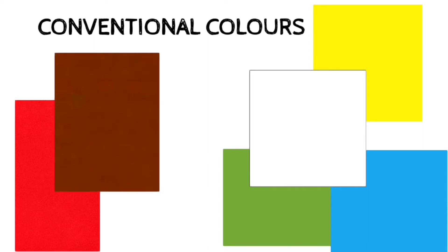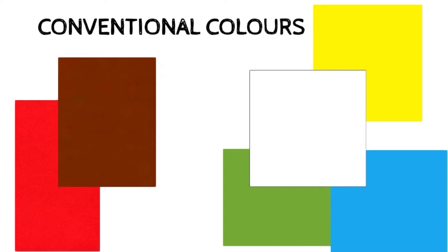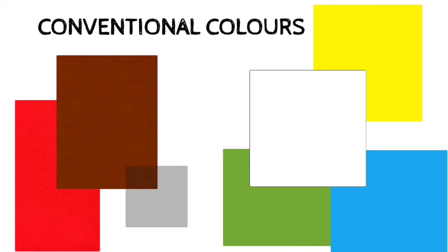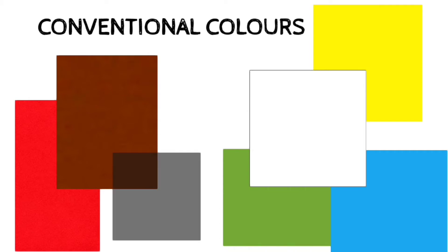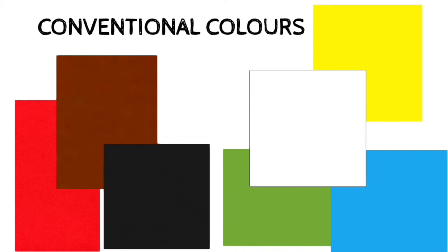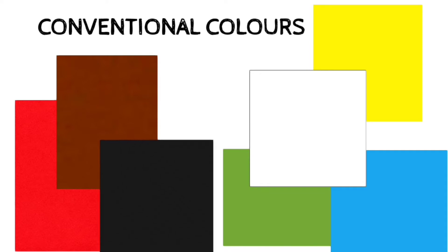Black color is used to show all the names written in a topo sheet, river banks, broken ground, dry streams, surveyed trees, heights and their numbering, railway lines, telephone and telegraph lines, and lines of latitude and longitude.